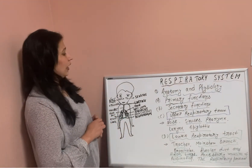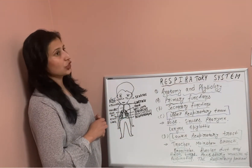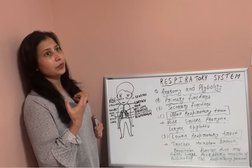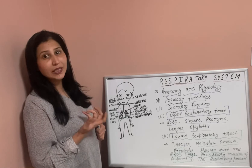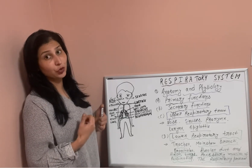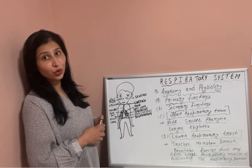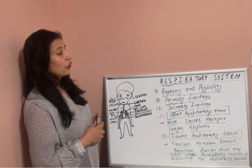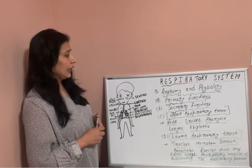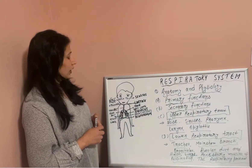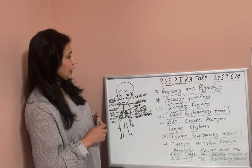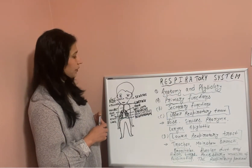The respiratory system also helps in heat balance. Whenever we are exercising, we are producing more heat and our breathing becomes faster, which helps regulate heat balance. Next is the upper respiratory system.